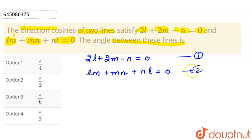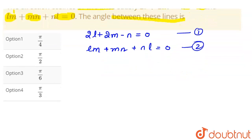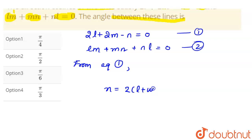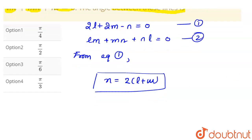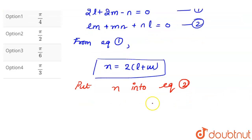From equation 1, we can say that n = 2(l + m). If n = 2(l + m), we can put this value of n into the second equation. Substituting n into equation 2 gives us lm + n(l + m) = 0.